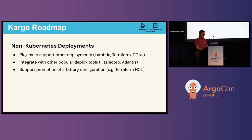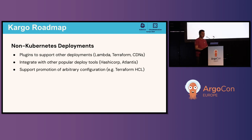In terms of where we see Cargo going forward, we feel the benefits of Cargo actually extend beyond Kubernetes. We want to make Cargo a solution to integrate with other technologies and configuration languages such as AWS Lambdas and Terraform. We want Cargo to integrate with other well-established tools aside from Argo CD, such as HashiCorp or Atlantis, and promote other non-Kubernetes configuration such as Terraform HCL.